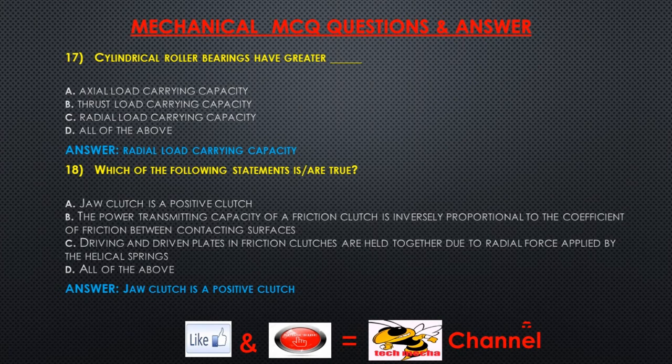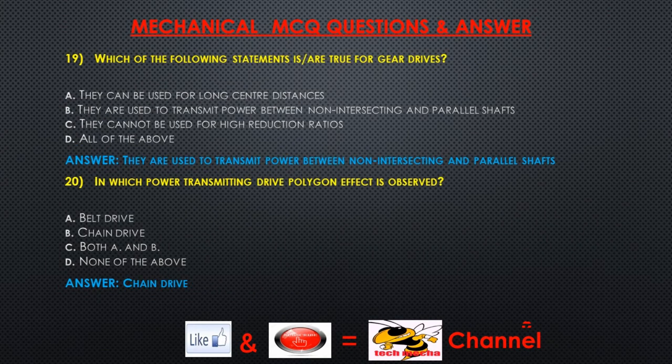Question 18: Which of the following statements is/are true? A) jaw clutch is a positive clutch, B) the power transmitting capacity of a friction clutch is inversely proportional to the coefficient of friction between contacting surfaces, C) driving and driven plates in friction clutches are held together due to radial force applied by the helical springs, D) all of the above. Answer: Jaw clutch is a positive clutch.